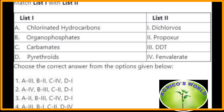Chlorinated hydrocarbons include DDT — DDT belongs to the group of chlorinated hydrocarbons. The organophosphate group includes dichlorvos. The carbamate group includes propoxur. Pyrethroids include fenvalerate. Here the right option is the fourth option.